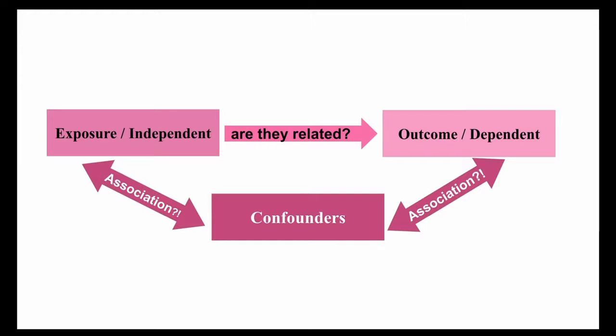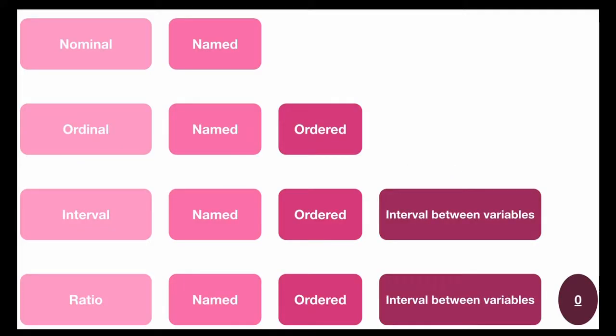Now let's define the four fundamental levels of measurement scales that are used to capture data in the form of surveys and questionnaires. The first measurement we have is the nominal scale. A nominal scale describes a variable with categories that do not have a natural order or ranking, such as gender and color.